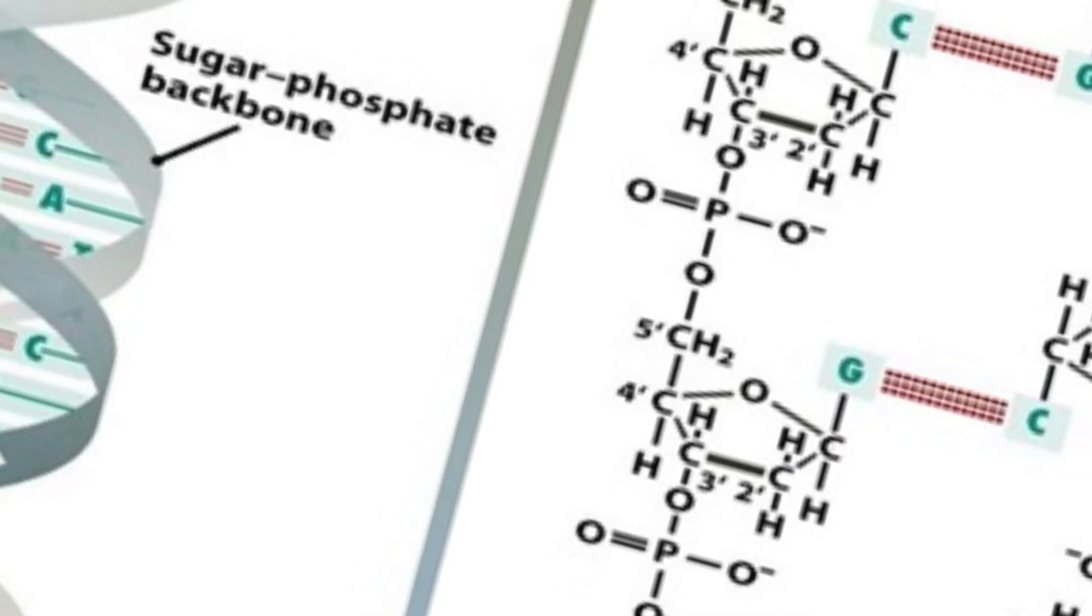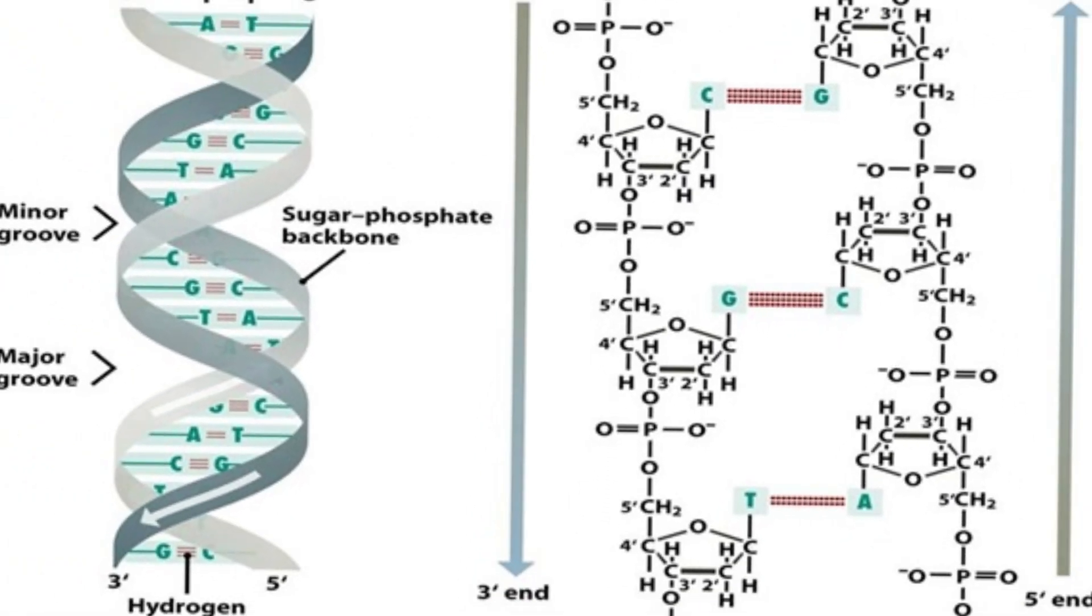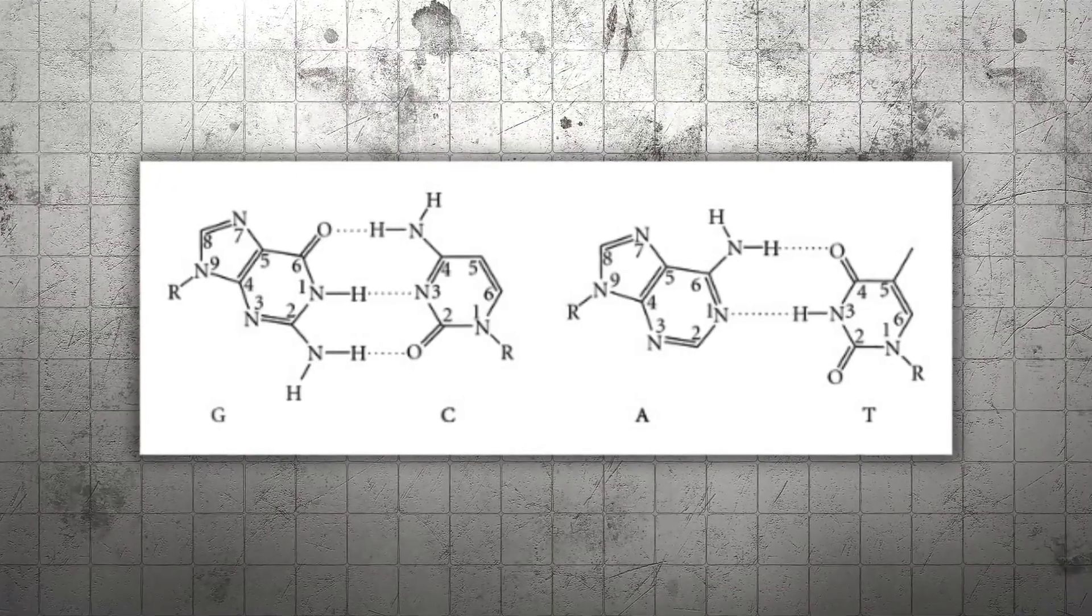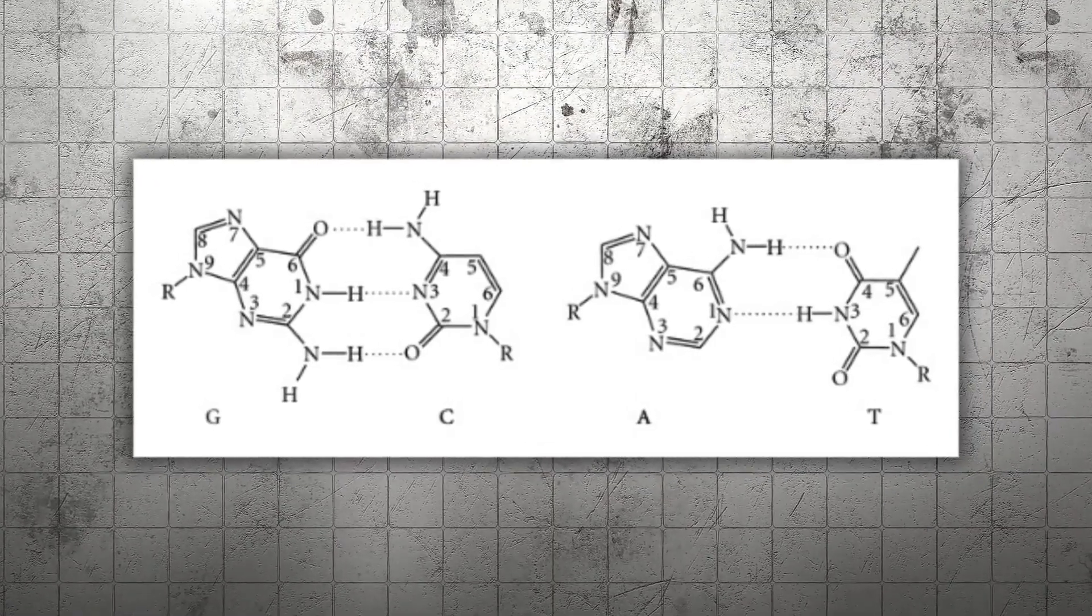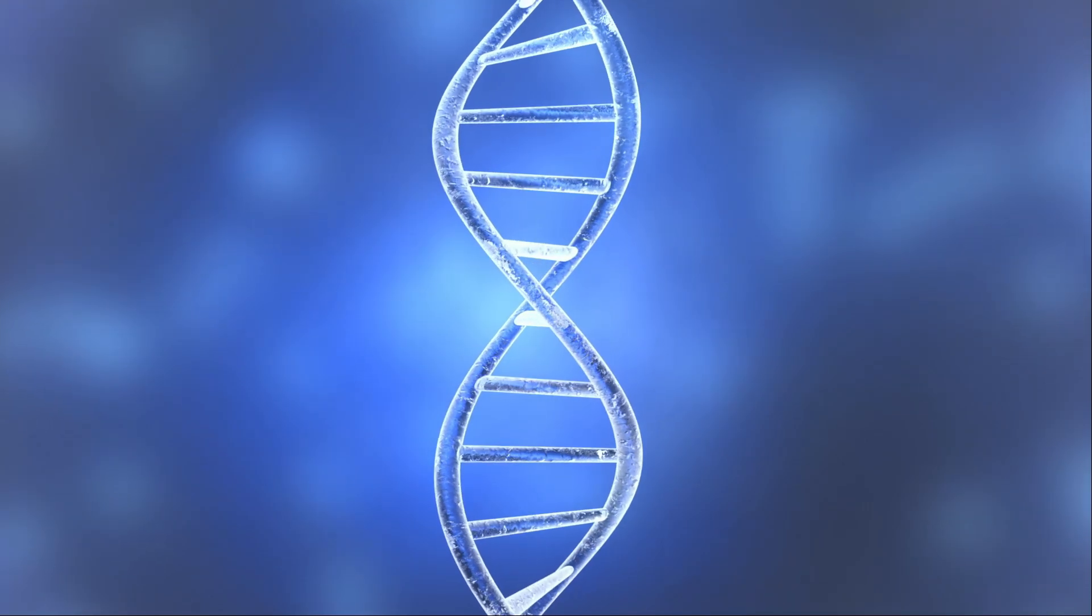Then, in early 1953, everything clicked. The two strands wound around each other in opposite directions. Bases paired exactly as Chargaff's rules predicted: A with T, G with C. At last, the structure of DNA revealed itself, the double helix.